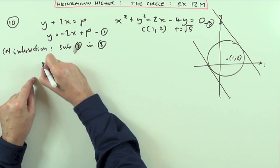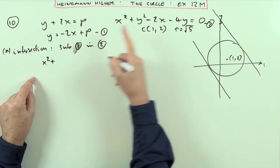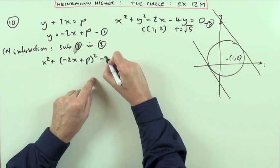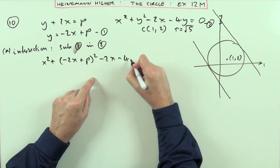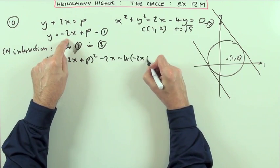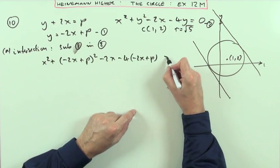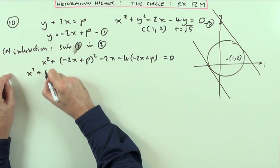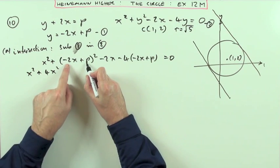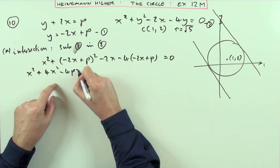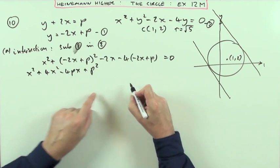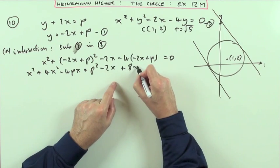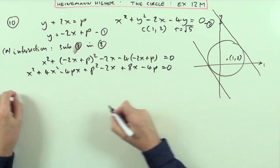So writing out equation 1, I've got x squared plus y squared is going to be this then, negative 2x plus P, minus 2x, minus 4y, well that's going to be minus 2x plus P, and that should just equal 0. So spelling this out, x squared plus square the first, 4x squared, twice the product, negative 2p doubled, negative 4px, square the last, P squared, minus the 2x, plus 8x minus 4p should equal 0.